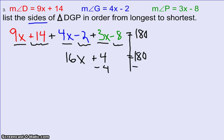I subtract 4 from both sides. So 16x equals 176. When I divide both sides by 16, what do I get? x equals 11.